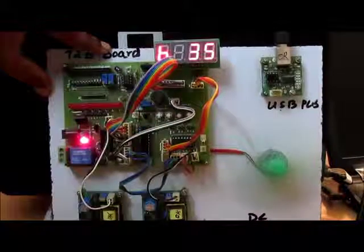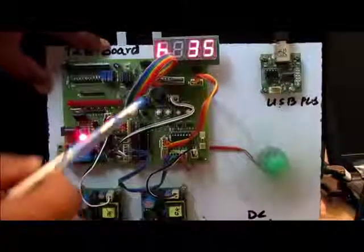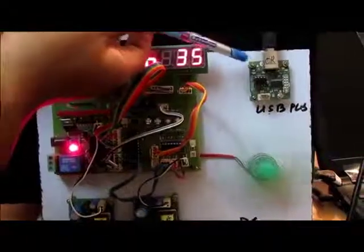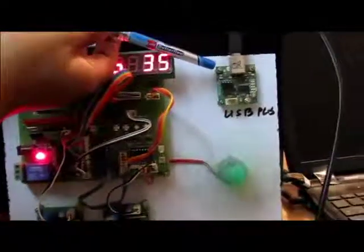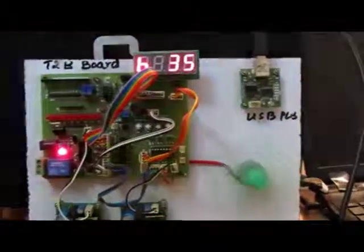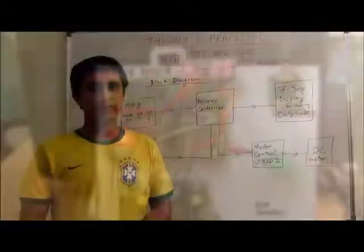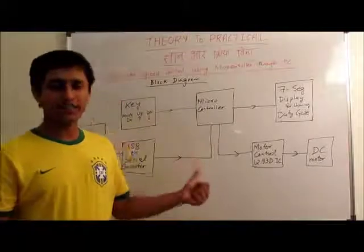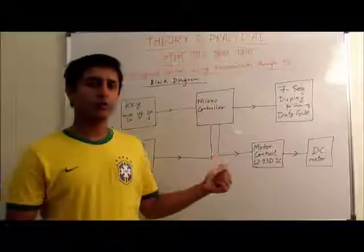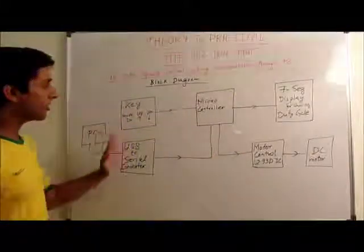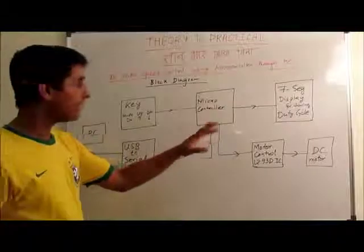It can also be controlled using a PC via this USB PCB. Moving on to our next topic — controlling the speed of a DC motor using a microcontroller. This is the block diagram of our project.